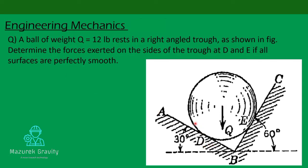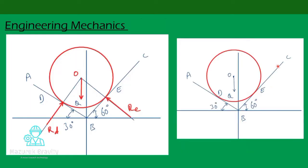Here the ball and right-angled channel are redrawn. This side of the angle is 60 degrees, this side is 30 degrees, and weight Q is acting downwards. The reaction from one side of the channel acts towards the center of the ball, denoted as Re, and the reaction from the other side acts towards the center of the ball, denoted as Rd.